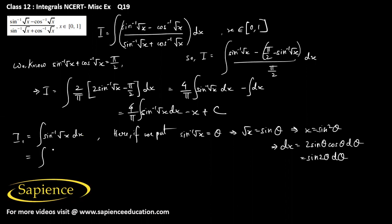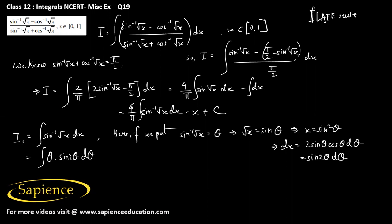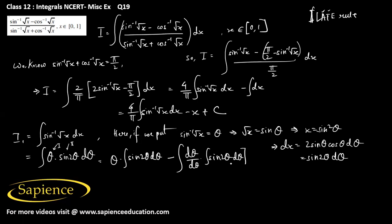So this integral can be written as integral of theta into sine 2 theta d theta. Here we have to use integration by parts, using the ILATE rule to choose the first and second functions. We have algebraic and trigonometric functions, so we choose the algebraic function theta as the first function and sine 2 theta as the second function. So this equals theta into integral of sine 2 theta d theta, minus integral of d theta by d theta into integral sine 2 theta d theta, whole integral d theta.